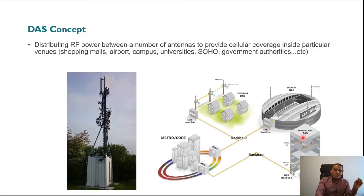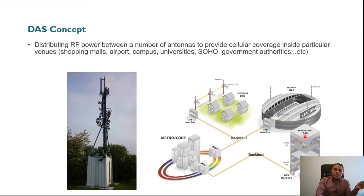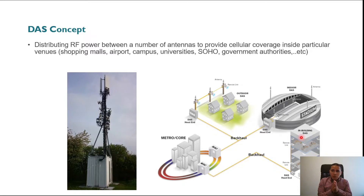Instead of transferring the whole power to one antenna, you use several antennas — for example 10, 15, or 20 antennas per floor — to cover each floor. You take the output power from the base station and distribute it among all of these antennas inside the floor. By doing this you are constructing a DAS network — a distributed antenna system.